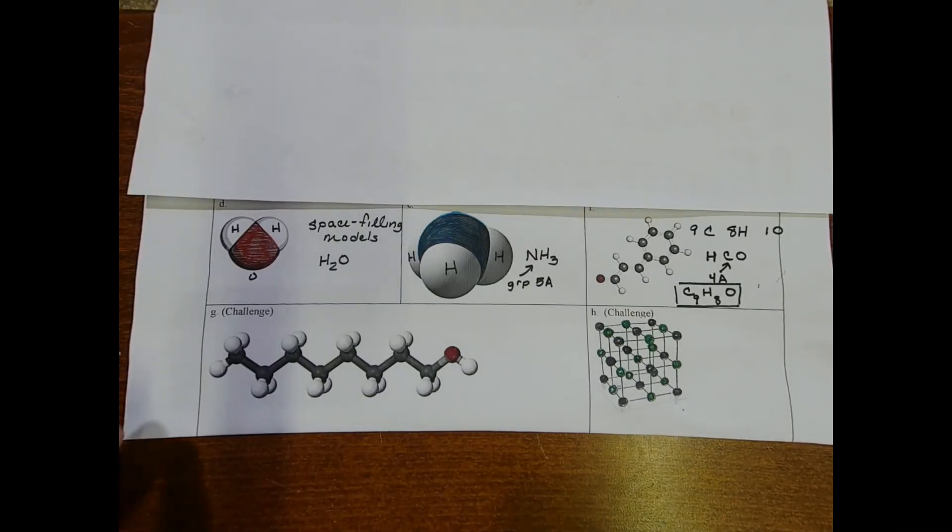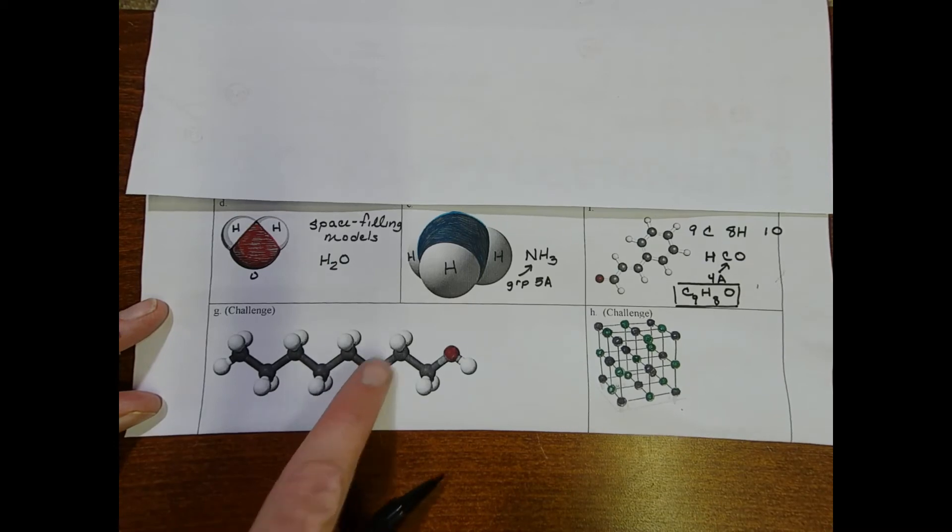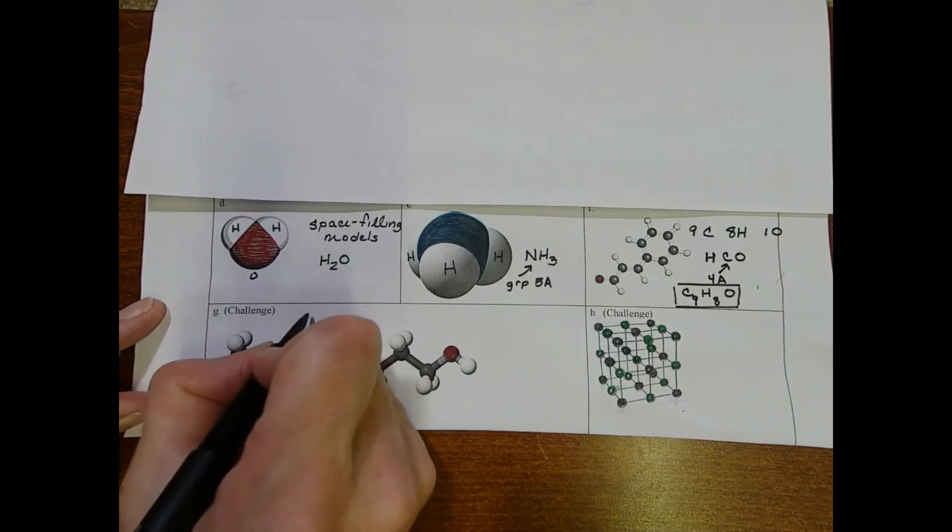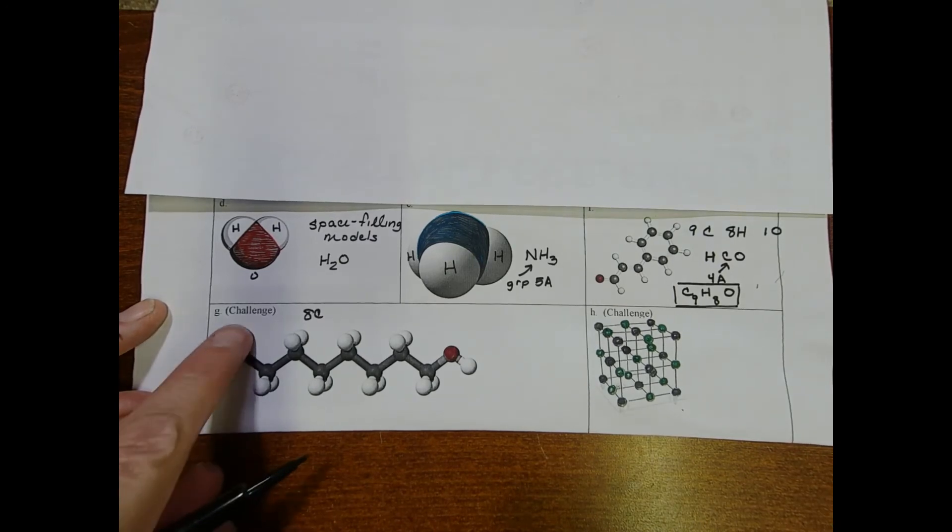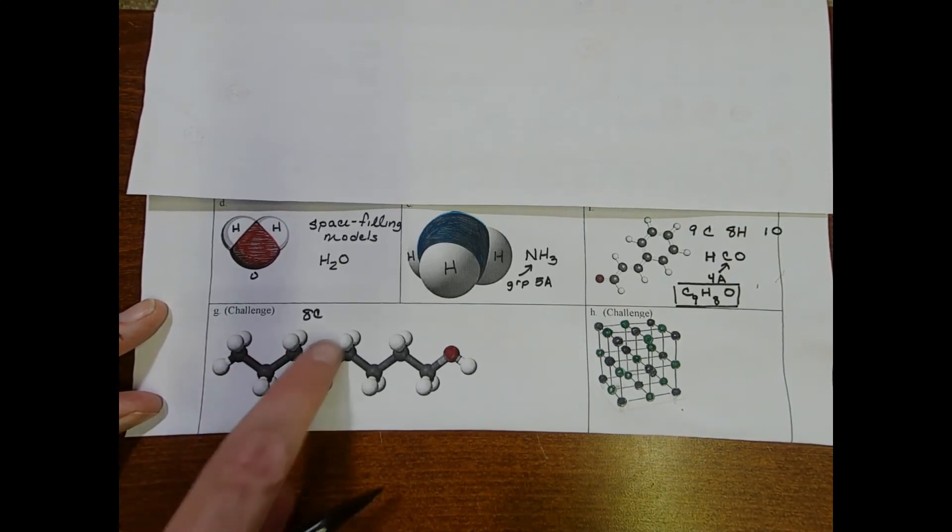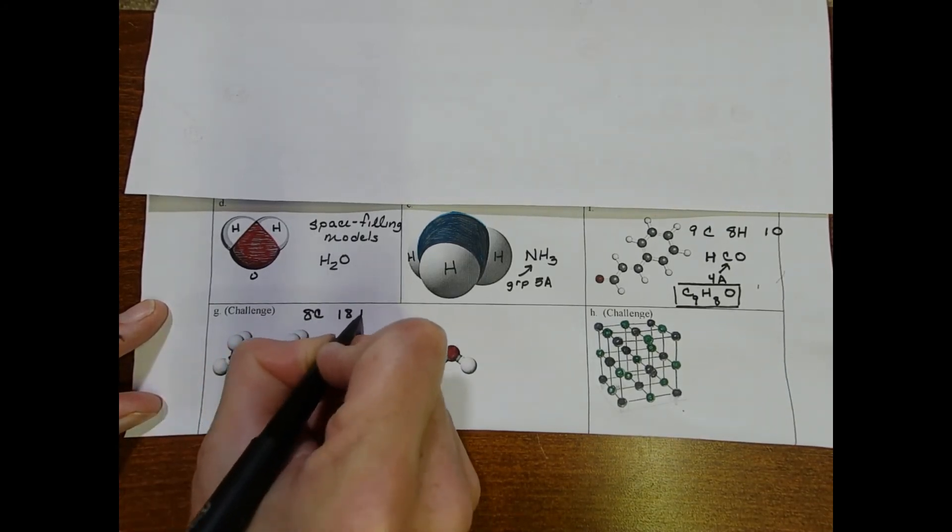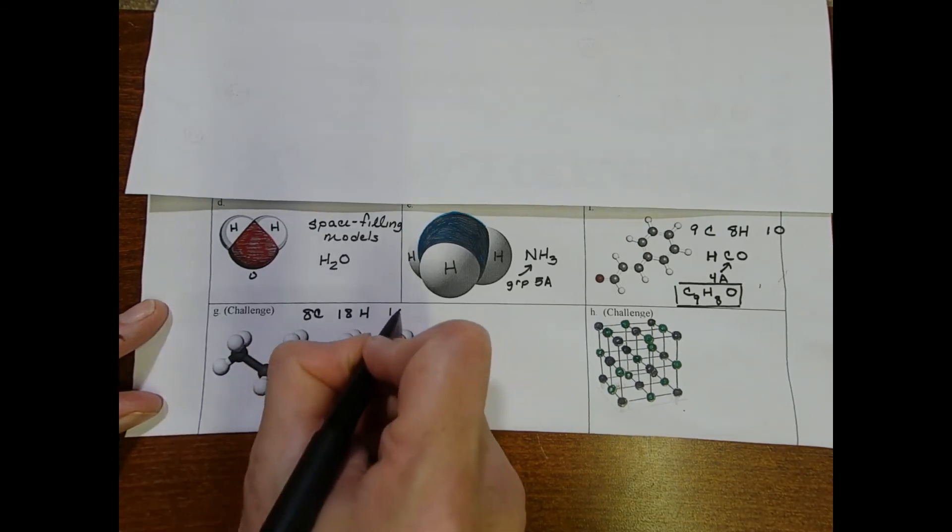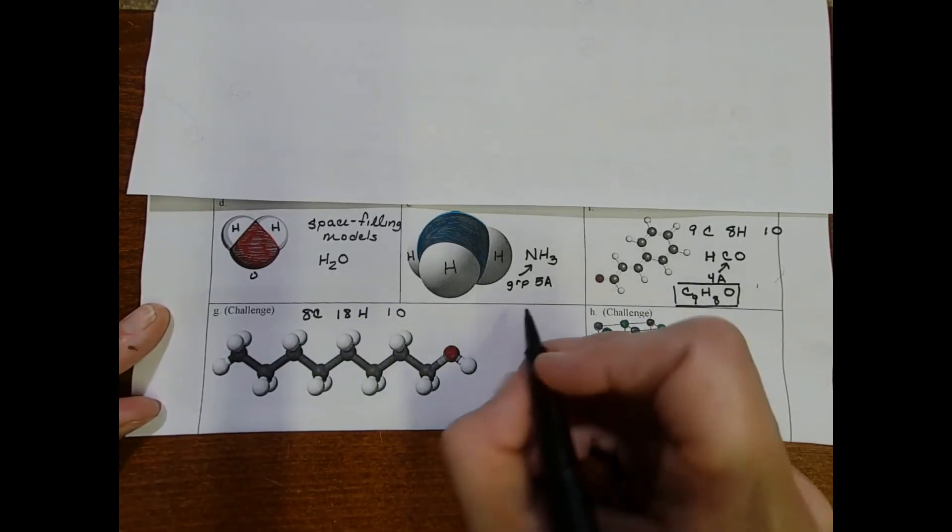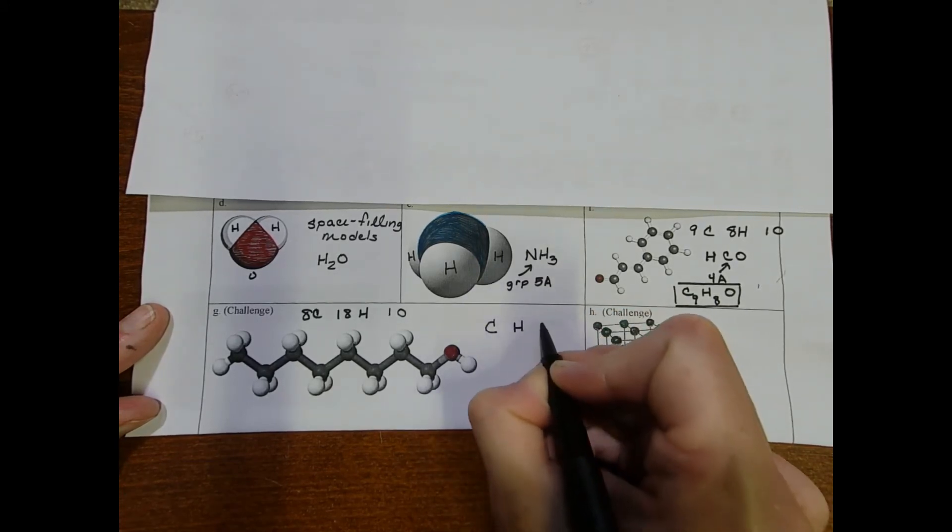On letter G, we have a long chain molecule. It has 1, 2, 3, 4, 5, 6, 7, 8, 8 carbons. 1, 2, 3, 4, 5, 6, 7, 8, 9, 10, 11, 12, 13, 14, 15, 16, 17, 18 hydrogens. And 1 oxygen. So the order is going to be the same order that we established over there. C, H, O.